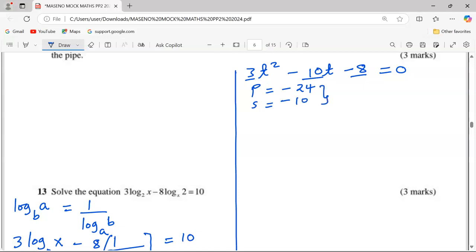So I need two factors. When multiplied, -24. When added, -10. And these are -12 and positive 2. Their product is -24, and their sum is -10.